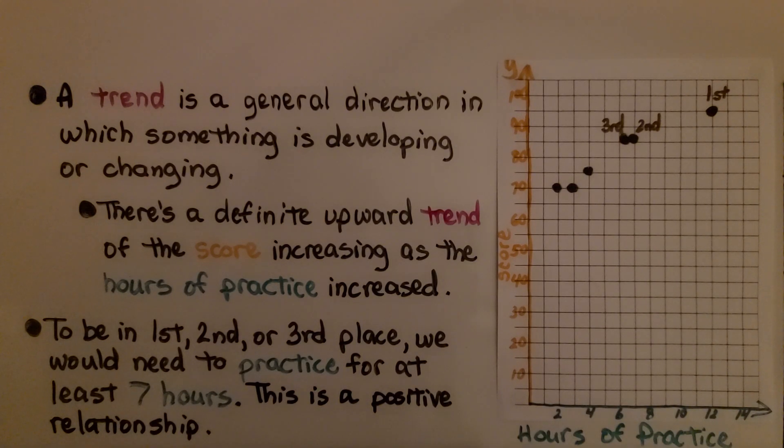A trend is a general direction in which something is developing or changing. There's a definite upward trend of the score increasing as the hours of practice increased. To be in first, second, or third place, we would need to practice for at least seven hours. This is a positive relationship. The more you practice, the higher your score.